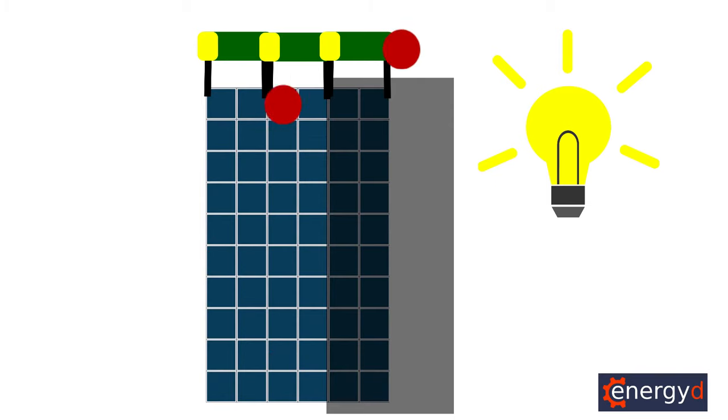If any of the cells in your solar panel array are causing a bottleneck, the bypass diode will jump into action and allow the rest of the cells to get back to work as they should.